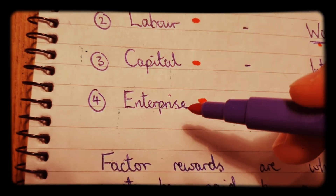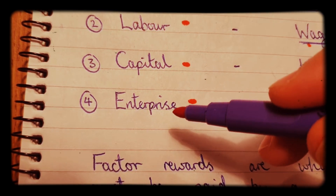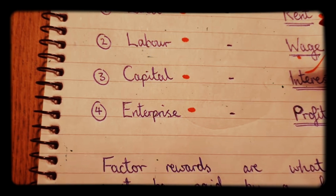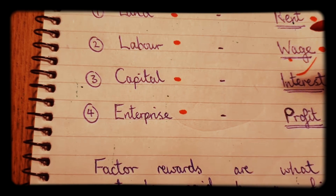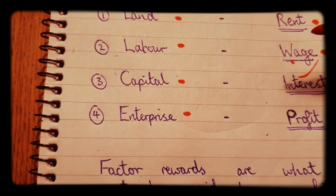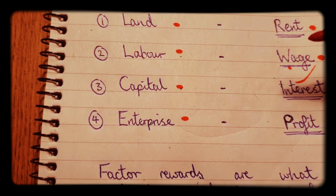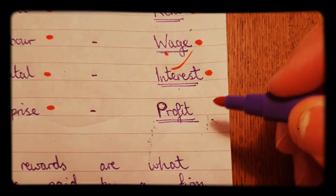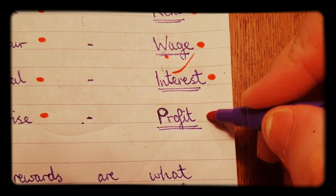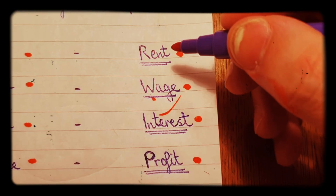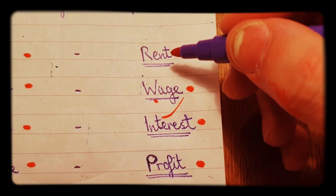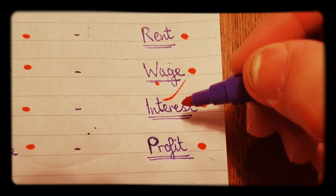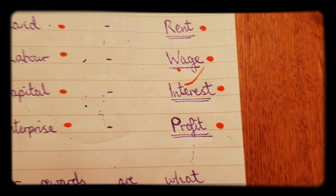And finally, for entrepreneurship — enterprise — what must be paid to the entrepreneur in order to benefit from the entrepreneur's risk taking? That would be profit. So here are the four factor reward payments: rent, wage, interest, and profit.